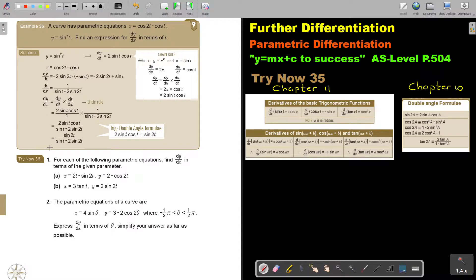Let's look at another example. The curve has parametric equation x equals cos 2t minus cos t and y equals sin squared t. Find the expression for dy over dx in terms of t.